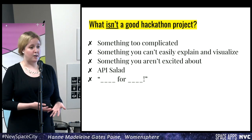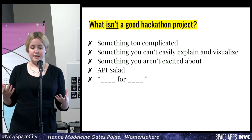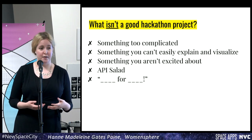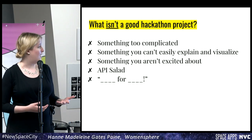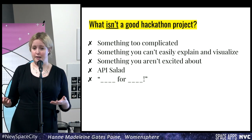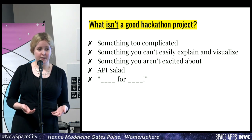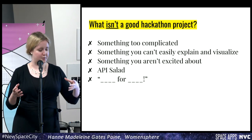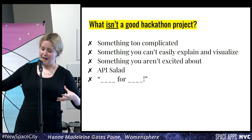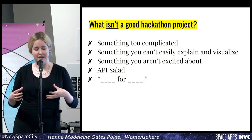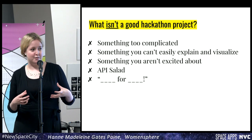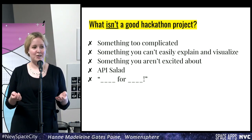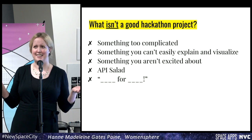Bad hackathon projects are big complicated things that you can't understand or define well, something that you can't actually explain to one another even on your own team. Something that you don't feel personally excited about — what I call API salad, which is when people just take an API and attach it to another API so you end up with, you know, Tinder for dogs or Uber for Mars in this case.